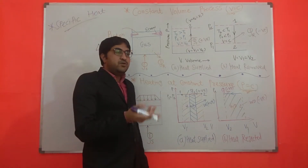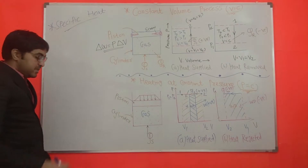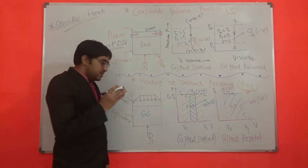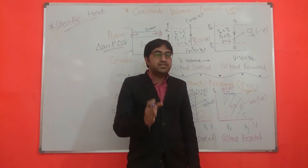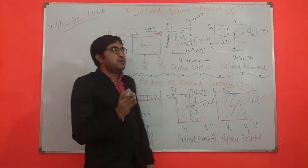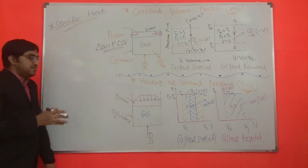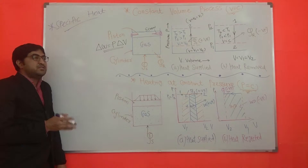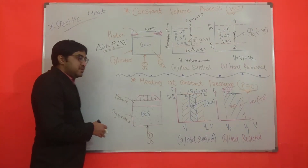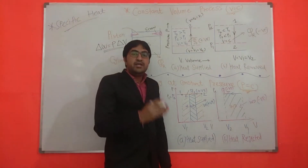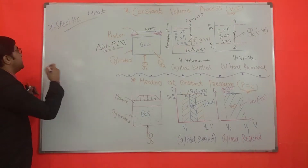Specific heat means the energy required to raise the temperature of one degree Celsius per unit mass of a substance. It is called specific heat. Specific heat is the amount of energy required to raise the temperature of one degree Celsius for any unit mass of substance.